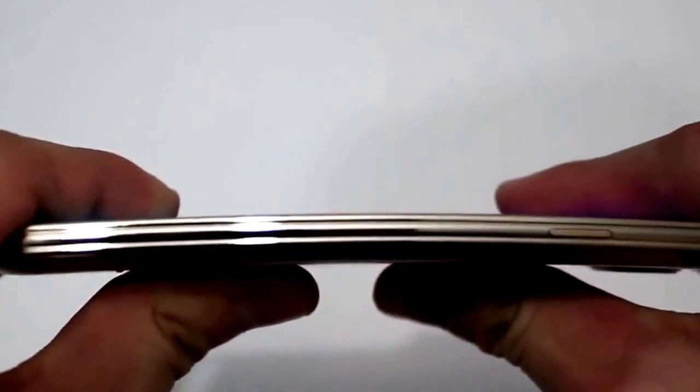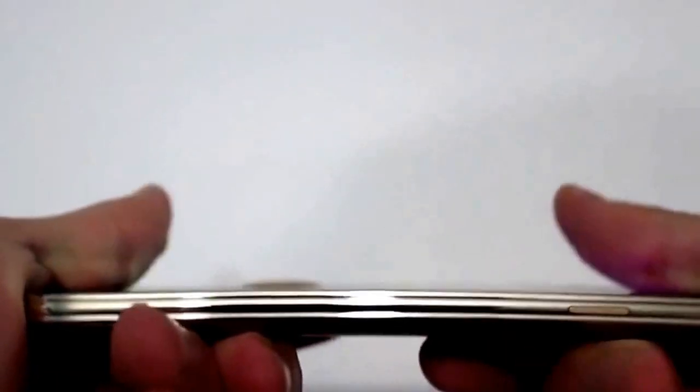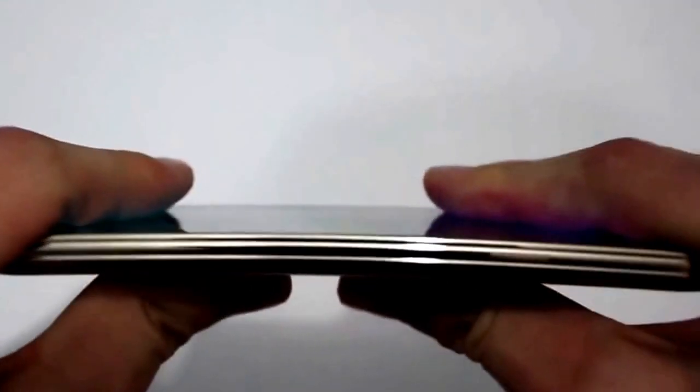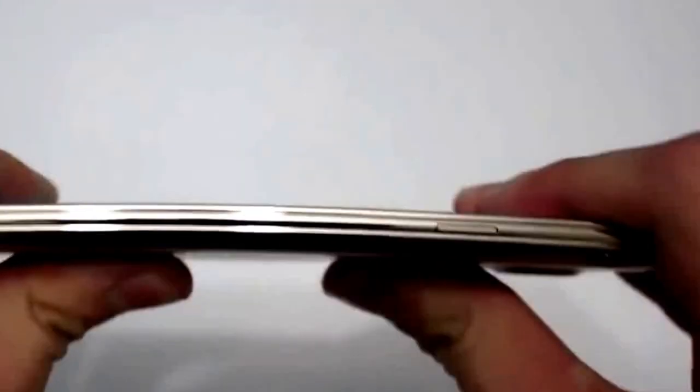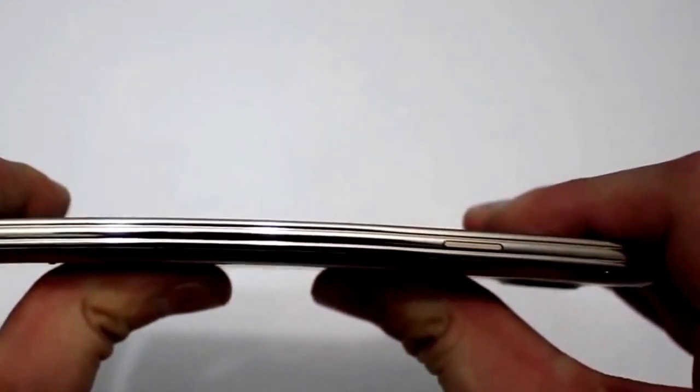So here we have the Samsung Galaxy S5 and as you can see I am applying a lot of pressure on the phone. The phone gets bent just a little bit but once I release the phone and do not apply more pressure, the phone goes back to normal as you can see here.